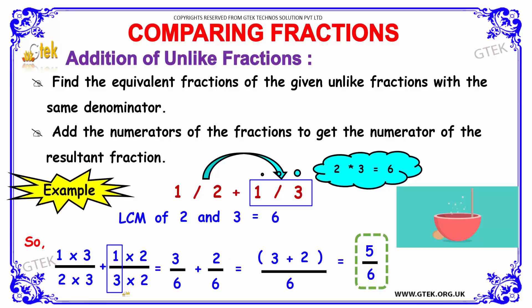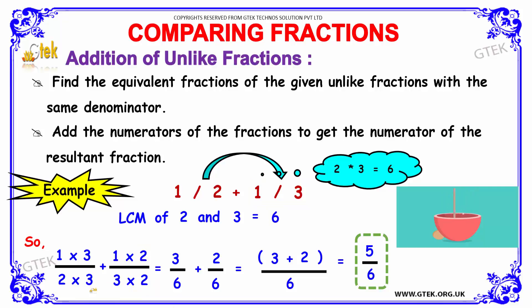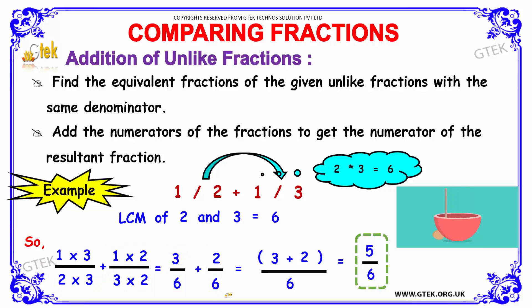Since we have 6 as the LCM, for the second term 1 divided by 3, we multiply by 2 in both numerator and denominator, because 3 into 2 equals 6. So the same 2 is multiplied with the numerator 1. Now both terms have denominator 6. We get 1 into 3 equals 3, and 1 into 2 equals 2. Adding the numerators: 3 plus 2 equals 5, over the common denominator 6. The answer is 5 divided by 6.